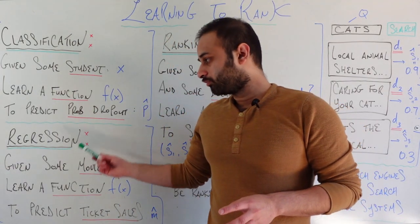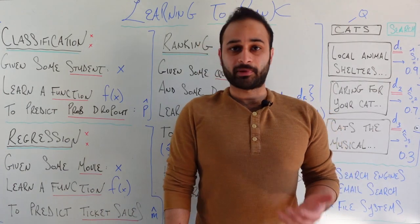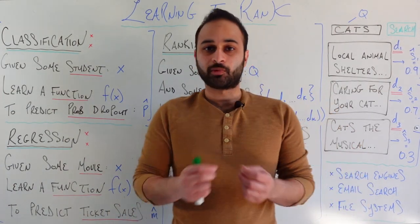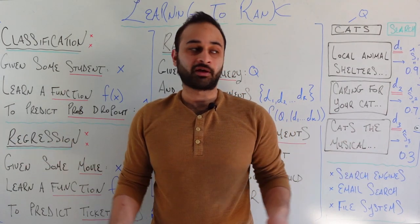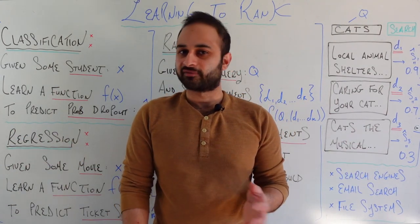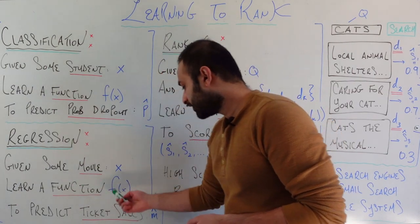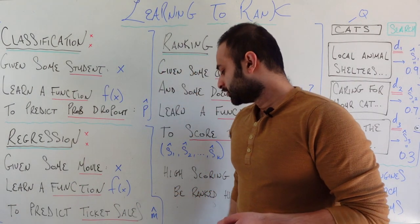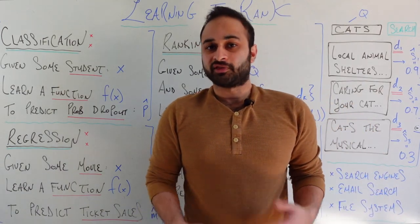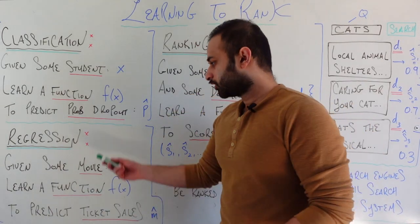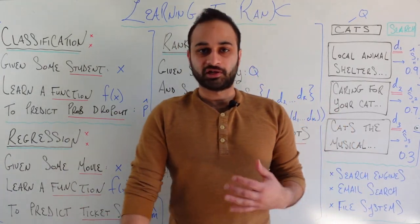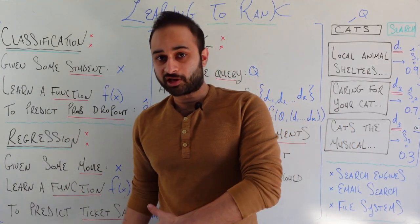We also have regression problems. For example, given some movie X — where X is a feature vector about a movie, like which actors are in it or how much was spent on production — can we learn a function f(X) that predicts the ticket sales, m-hat, the money the movie will make? This predicts a continuous value instead of a discrete value, and so we call these regression problems.